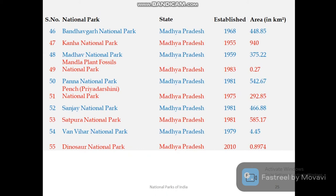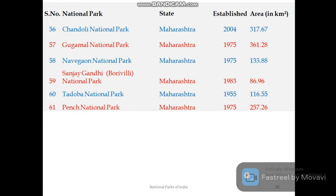Madhya Pradesh, as we know, has the most national parks — ten. These are: Bandhavgarh, Kanha, Madhav National Park, Mandla Plant Fossil National Park, Panna, Pench, Sanjay, Satpura, Van Vihar, and Dinosaur National Park.